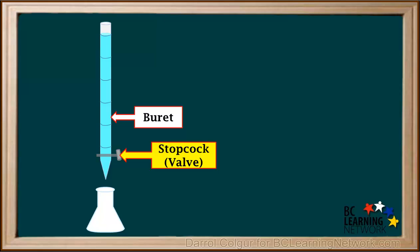This valve, called the stopcock, is closed to keep the liquid in the burette. When it's opened, liquid will drip or flow out of the bottom of the burette.